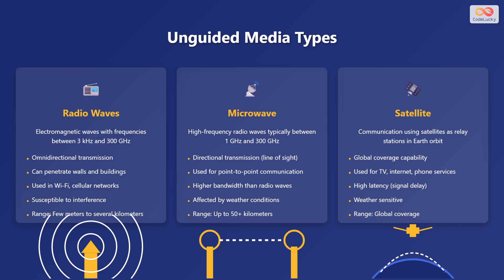Microwave communication uses high-frequency radio waves, typically between 1 gigahertz and 300 gigahertz, for directional transmission and point-to-point communication. Satellite communication uses satellites as relay stations in Earth orbit to provide global coverage for television, internet, and phone services.